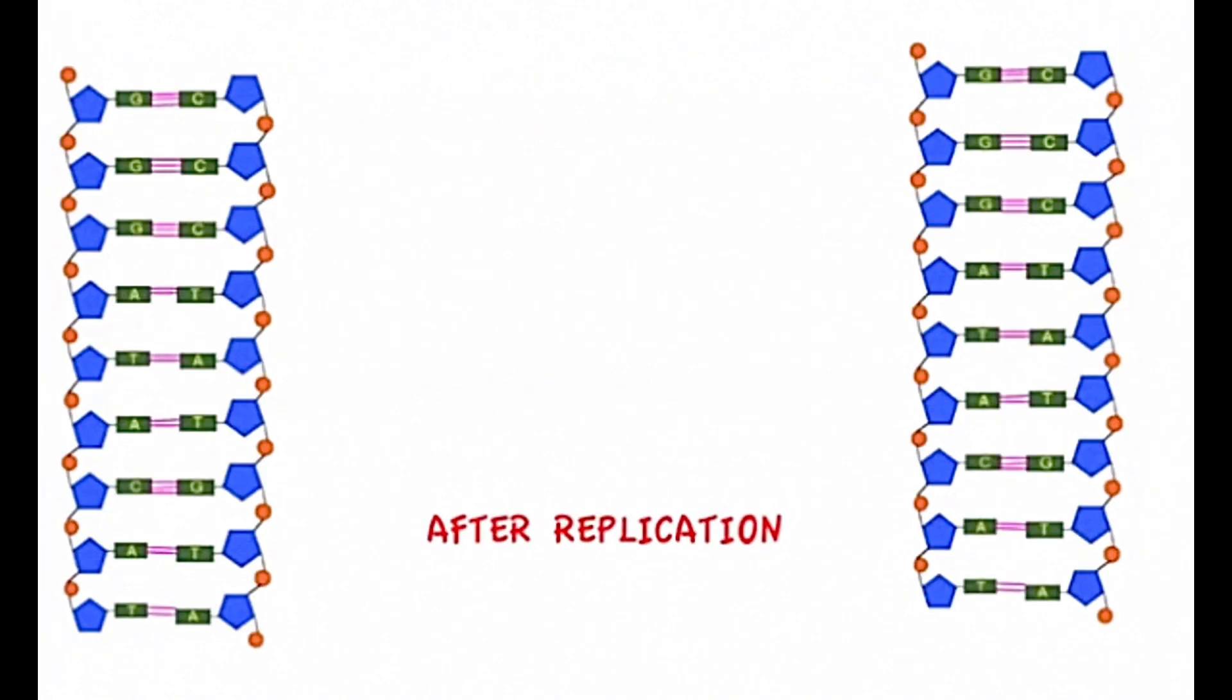Finally, two identical daughter molecules of DNA are created which are identical to the original piece of DNA. These daughter molecules then rewind to form a double helix.